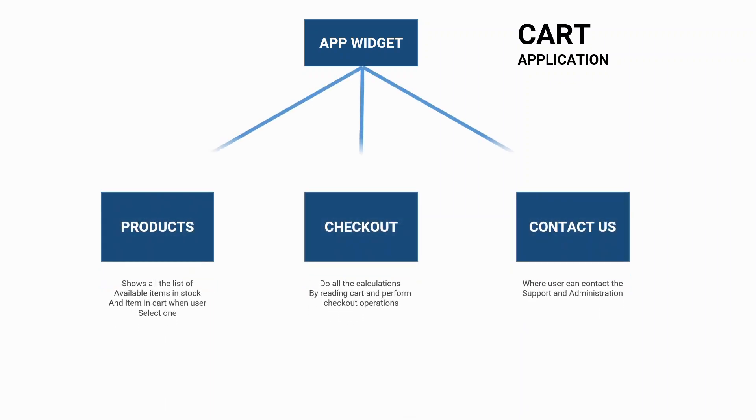Now let's consider an example of a cart application. Suppose we have a cart application and we would have an app widget which is the root widget of our application. In our application there are three different screens: the first one is the product screen, the second one is the checkout screen, and the third one is the contact screen. This app widget is hosting all these screens — it is the root widget.